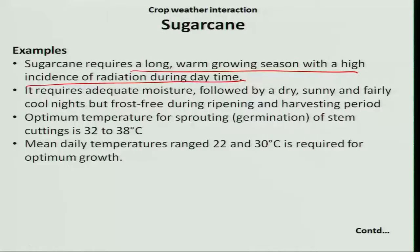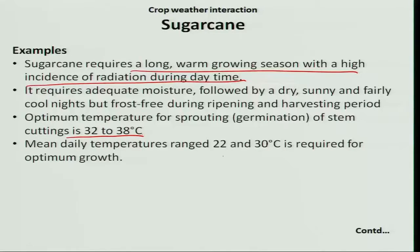The optimum temperature requirement for sprouting or germination of a stem cutting is 32 to 38 degree Celsius. For maximum growth during the 6 to 7 months growing period, it requires an optimum temperature of 22 to 30 degree Celsius. Since the growth period is very long, the temperature factor is most important, and therefore we should consider the base temperature.